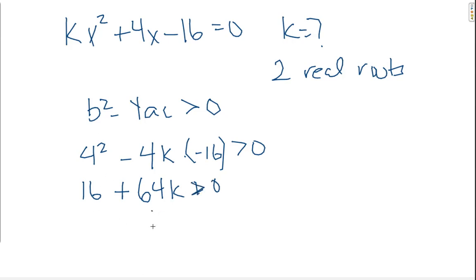Subtract it over. 64k is bigger than negative 16. So, k is bigger than negative 16 divided by 64, which is negative 1 quarter.